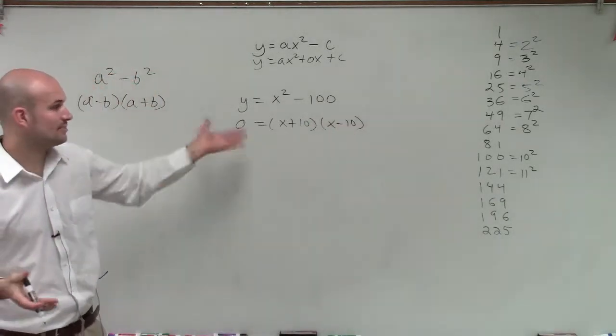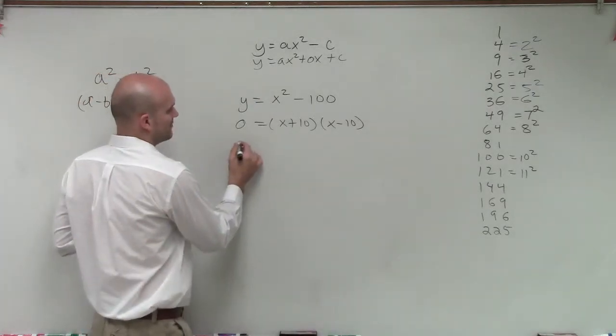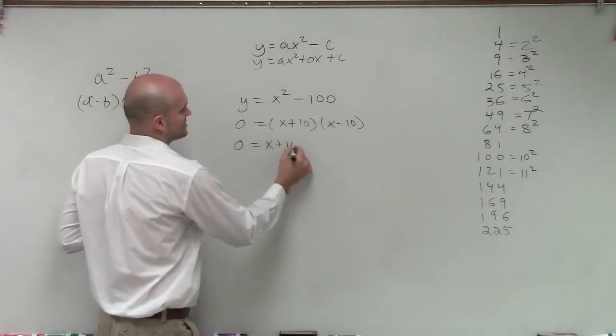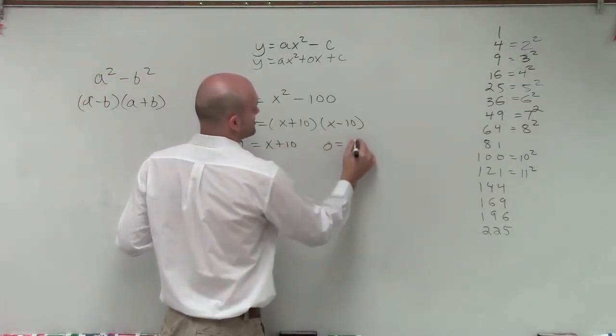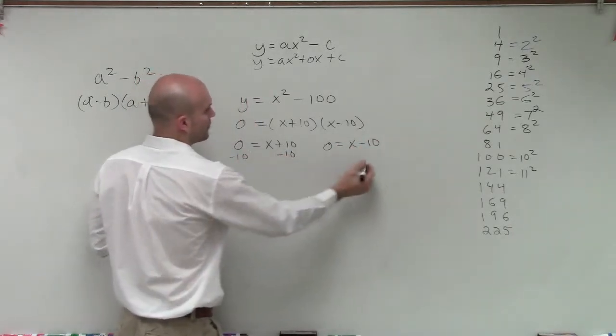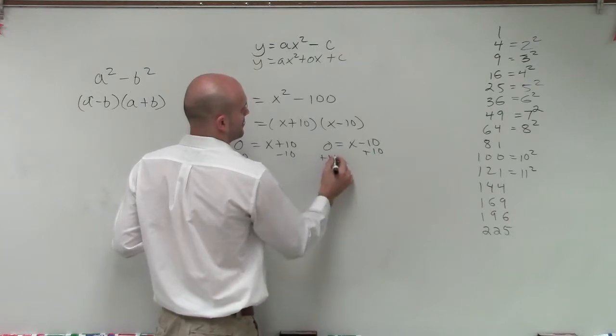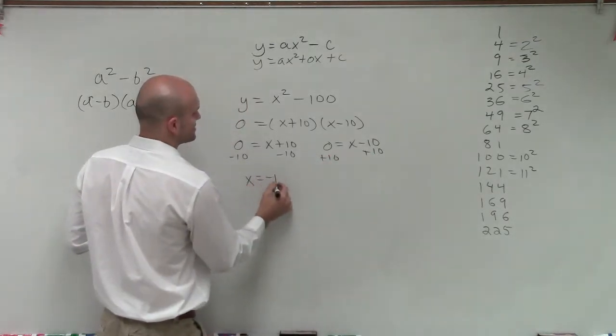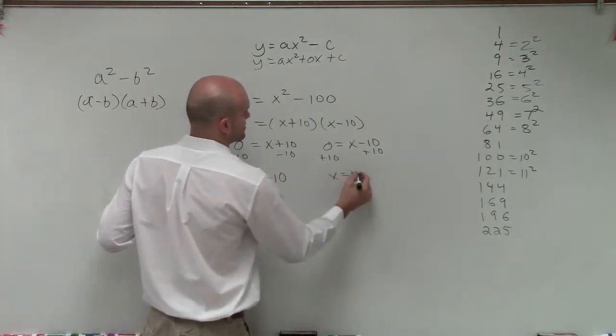Now I'm going to apply the zero product property. So therefore, 0 = x + 10, and 0 = x - 10. Then I solve for both by isolating x. So x = -10, and x = 10.